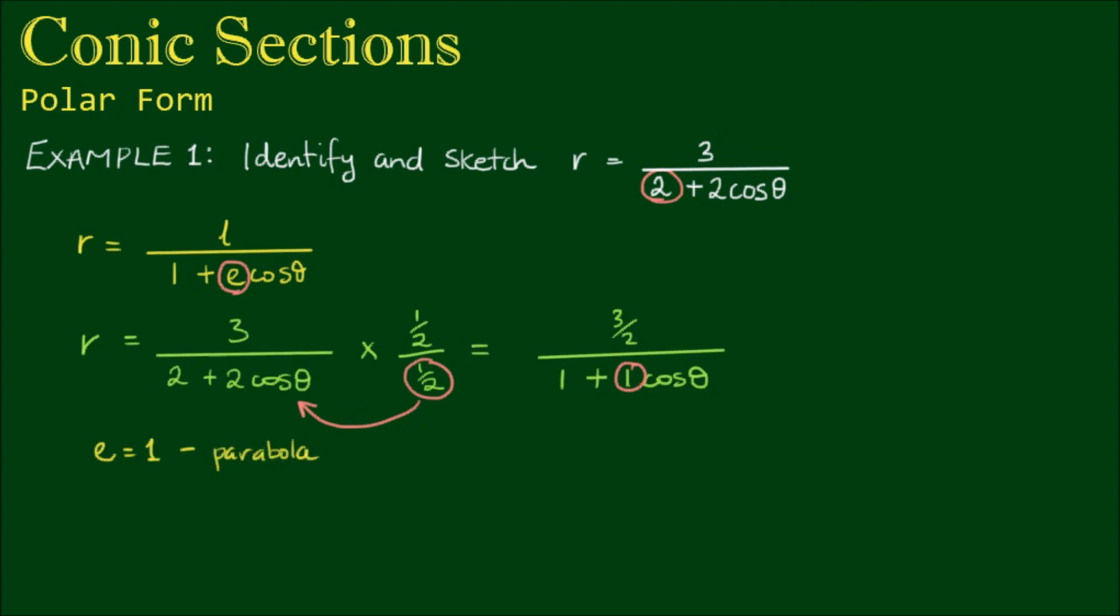And this parabola will have its focal point at the pole. Now in order to roughly sketch this parabola, we'll need a few more bits of information. The key one would be the position of the vertex. Now also note here that the sign in the denominator is positive. When we have a positive, we know that the directrix of the conic is located on the right-hand side. And thus the parabola would open up towards the left.